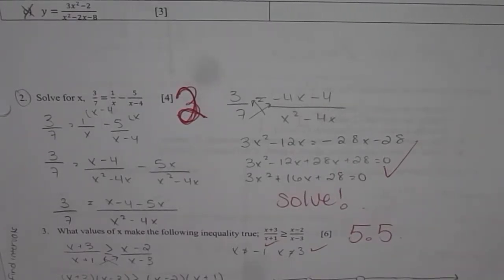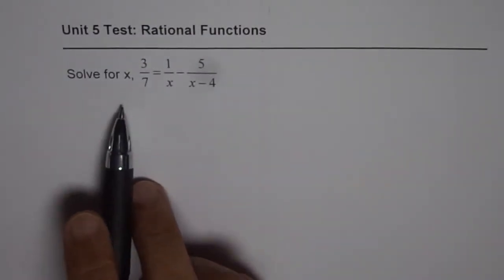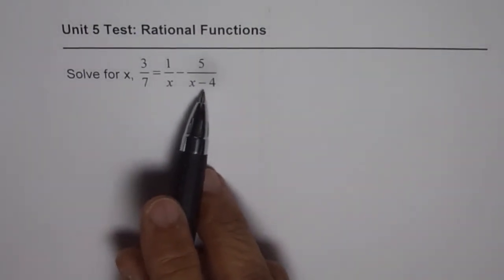Let us discuss this question at length. The question is, solve for x: 3 over 7 equals 1 over x minus 5 over x minus 4.